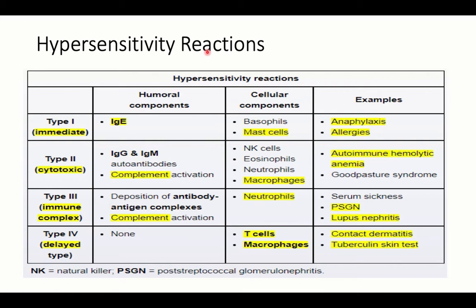There are four types of hypersensitivity reactions. Type 1 is the immediate reaction occurring on second exposure to a certain antigen. On first exposure, IgE antibodies specific for the antigen are produced. On secondary exposure, IgE recognizes the antigen, binds to mast cells causing degranulation, and release of histamine and other inflammatory mediators, producing allergic reactions and in severe cases, anaphylaxis.